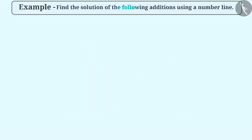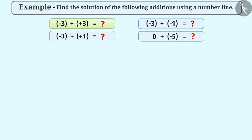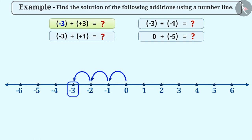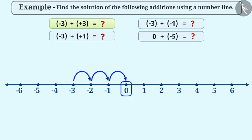Next example: Find the solution of the following additions using a number line. For addition of minus 3 and plus 3, draw a number line of integers. The first integer is minus 3. The negative sign shows we need to move to the left from 0, and the number shows the number of steps to be moved. The second number is plus 3, a positive integer. The positive sign shows we need to move to the right, and the number shows the number of steps to be moved. Hence, we move 3 steps to the right and reach 0. This is the result of minus 3 plus plus 3.